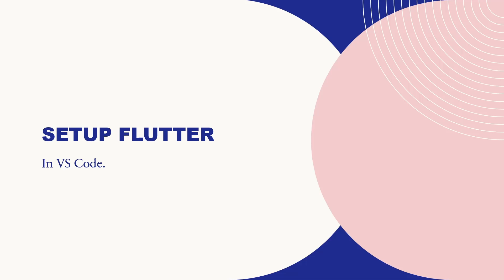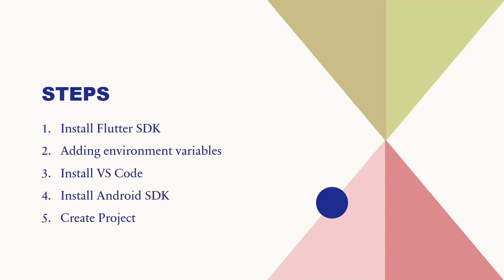Our today's topic is setting up Flutter in VS Code. For that we will need to follow some steps. First, we have to install the Flutter SDK. Then we will set the environment variables. Third, we will install VS Code. We also need the Android SDK to develop Android APKs. Fifth, we will be creating a project to verify our app is set up properly.